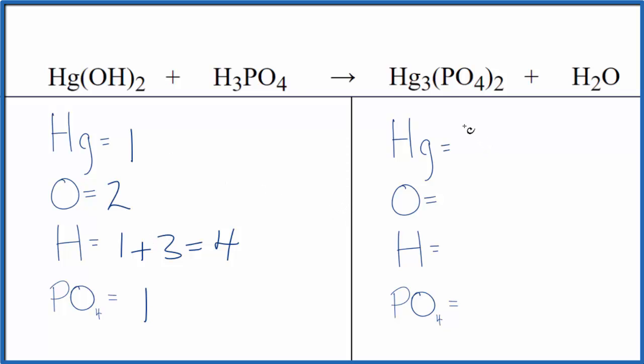On the product side, we have three mercury, we're going to leave the phosphate alone for now, we have one oxygen, two hydrogens, and then we have two of these phosphate ions here. That makes it a lot easier, you get the same answer either way, this is just quicker.